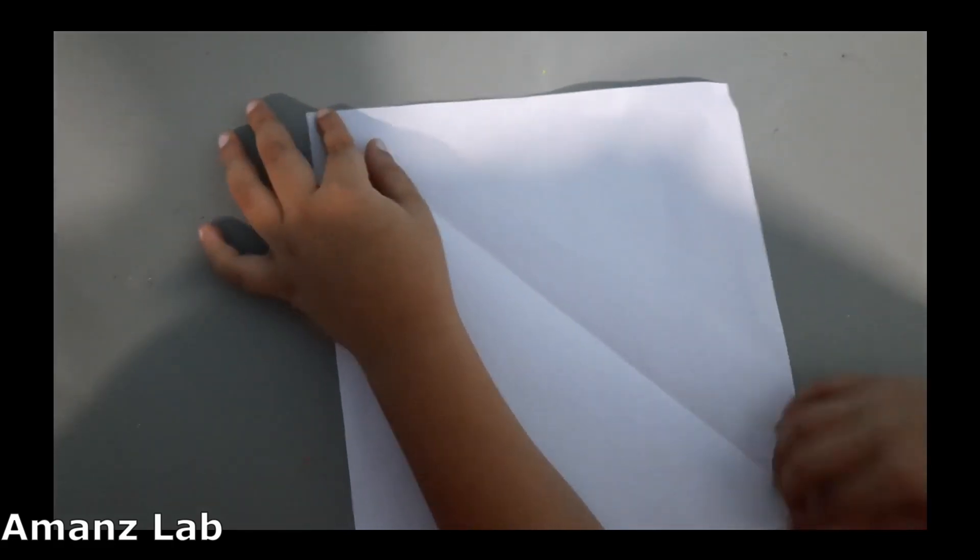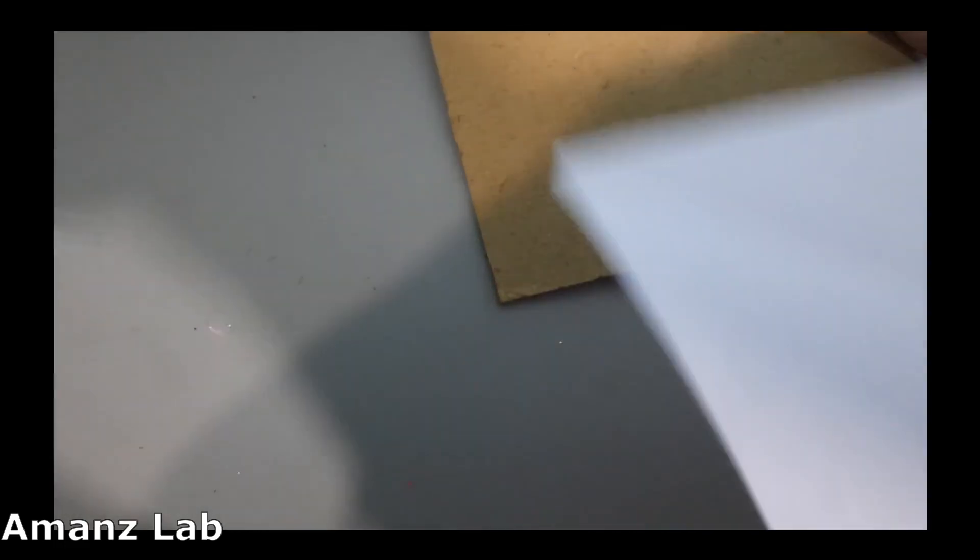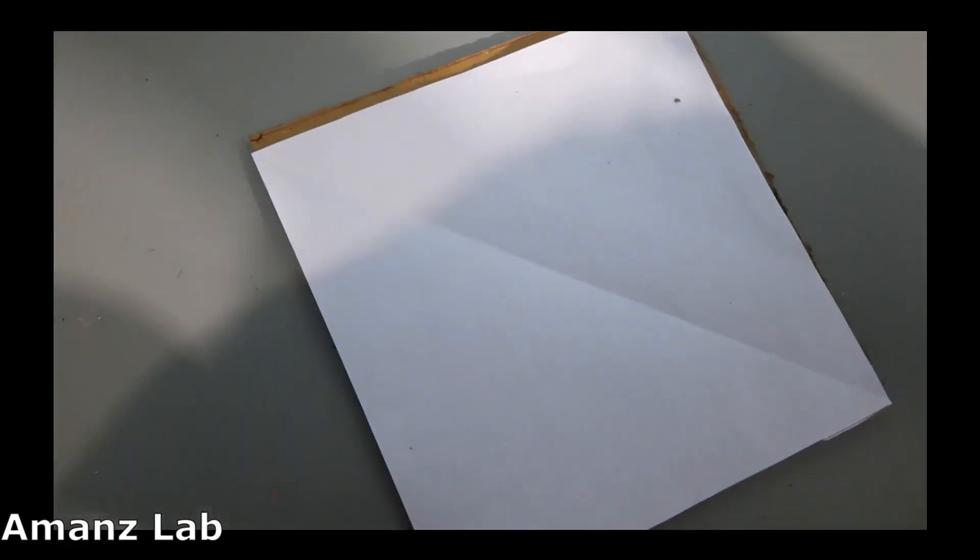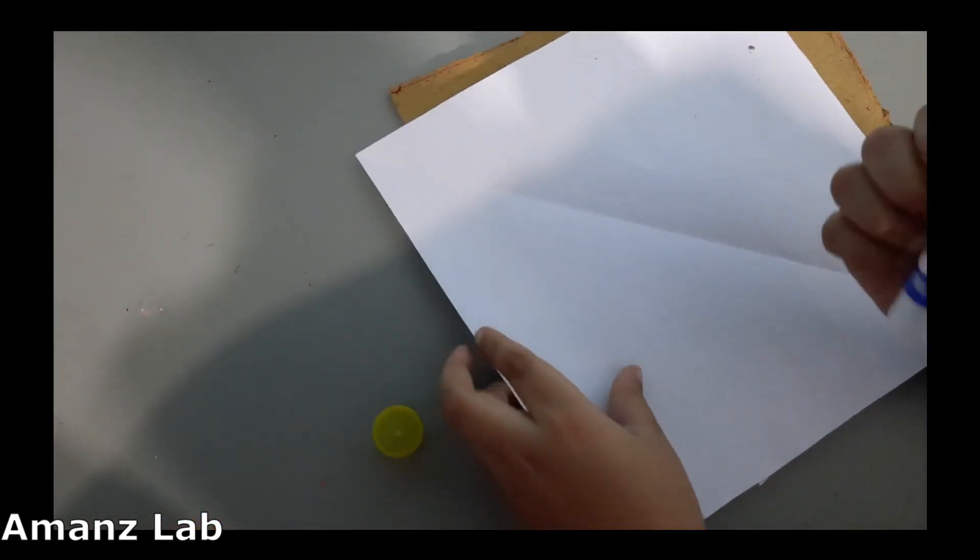Take another square piece like this and also take a cardboard piece. Let us stick this square piece on one side. First apply the glue on the paper.